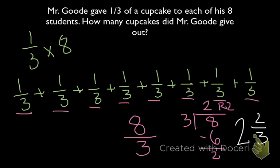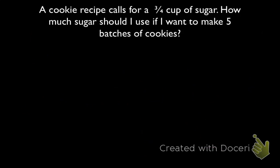So for 8 students total, Mr. Good gives out 2 and 2 thirds cupcakes. Now it's your turn. At this point in time, you can feel free to pause the video and solve for yourself, and resume the video once you want to check your answers. Remember that we're looking at this problem and want to represent it as a repeated addition problem.